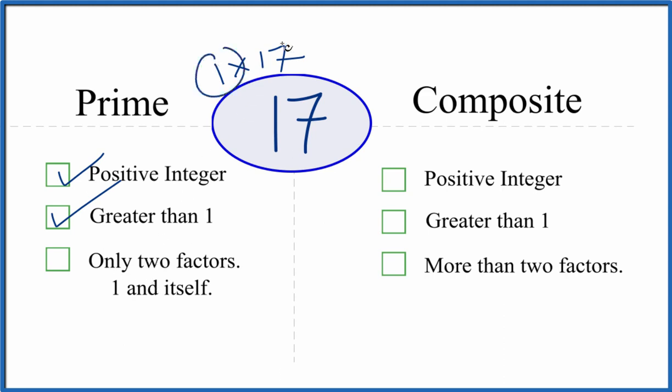And that means we only have the two factors, and that means that 17 is a prime number.